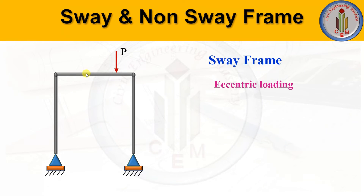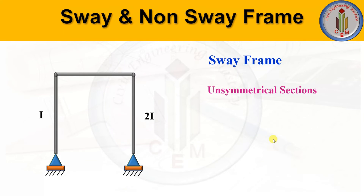The next factor is eccentric loading. A load P acting at some distance from the center of the frame creates eccentricity. This eccentric vertical load will make the frame sway. If the load acts at the exact center of the frame, it will be a non-sway frame.